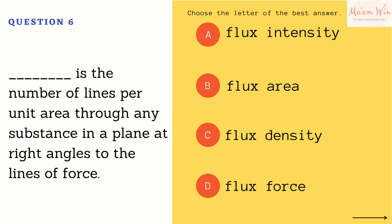Question number six: blank is the number of lines per unit area through any substance in a plane at right angles to the line of force. Letter A, flux intensity. Letter B, flux area. Letter C, flux density. Letter D, flux force. Choose the letter of the best answer.